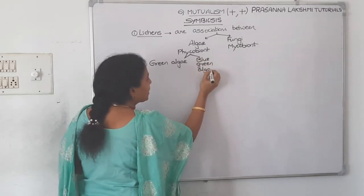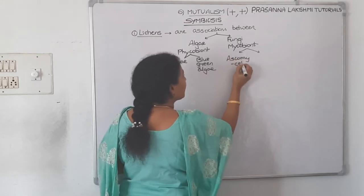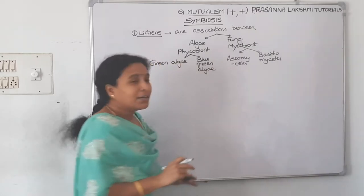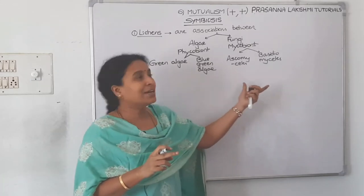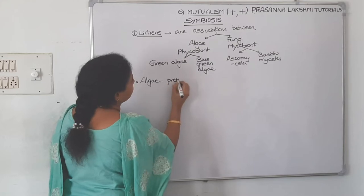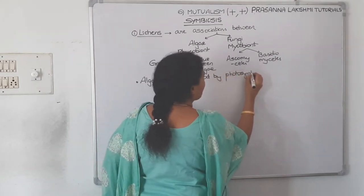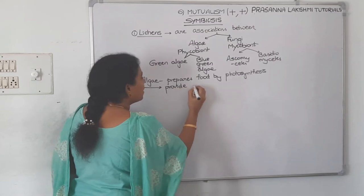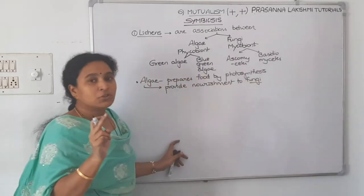Which classes of fungi form lichen associations? Either ascomycetes members or basidiomycetes members. Now, what benefit does the algae get from associating with fungi, and vice versa? Algae prepares food by photosynthesis, and since algae prepares food by photosynthesis, algae will provide nourishment to fungi. So the benefit fungi gets from the algal association is food.